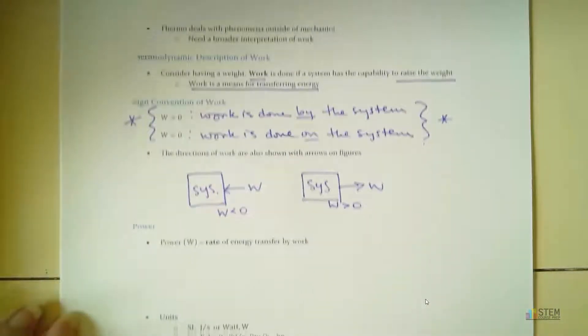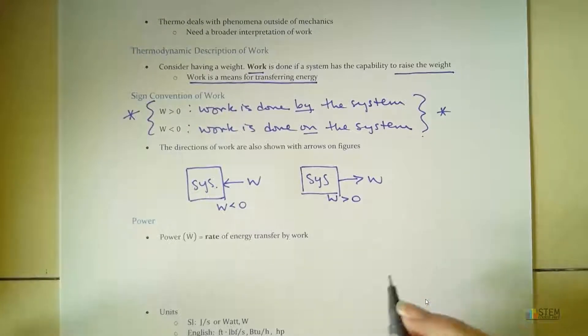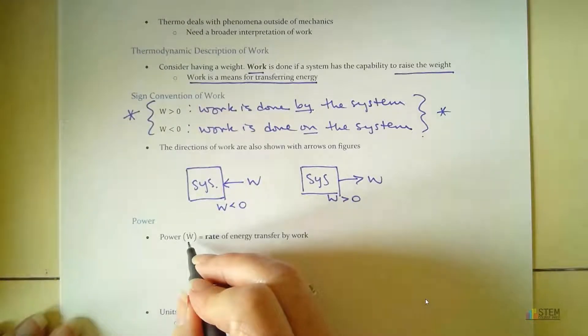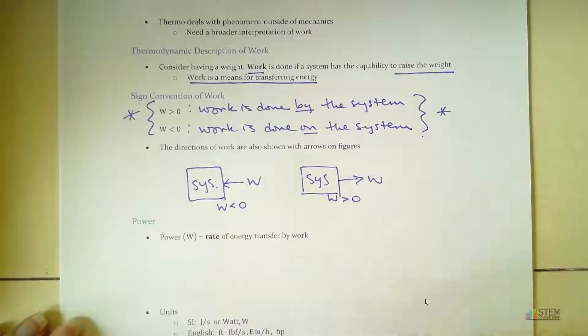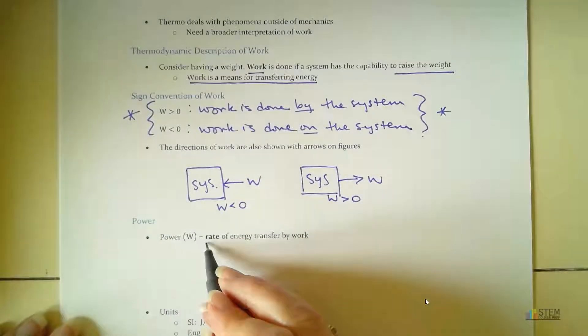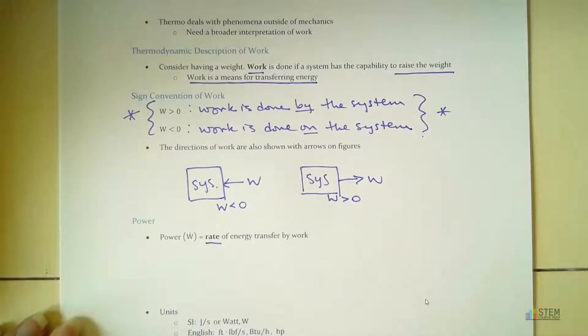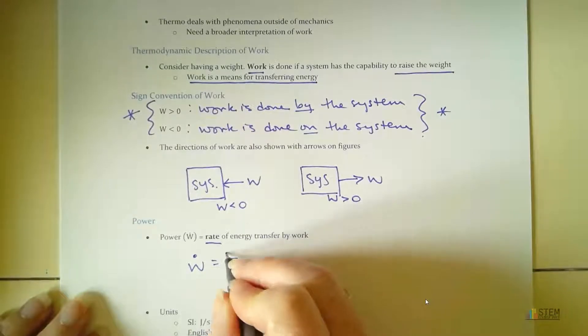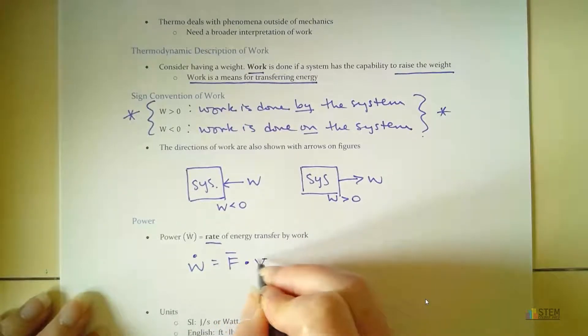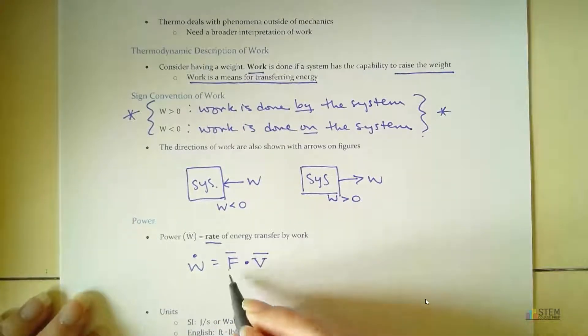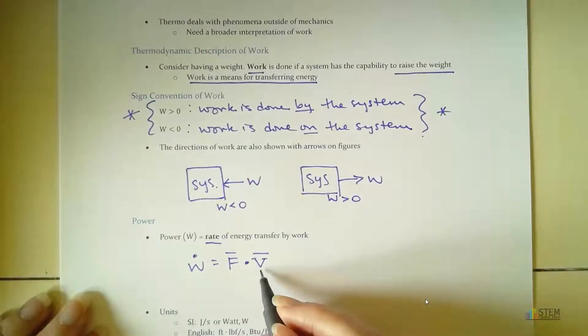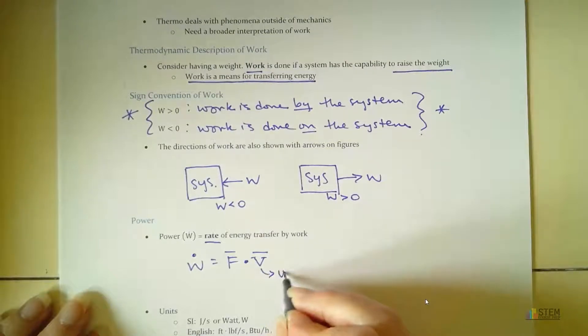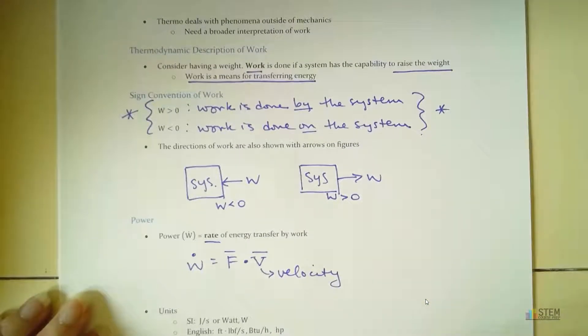Now, power is directly related to work. So our symbol for power is going to be the W with the dot there. And what it is, is it's the rate of energy transfer by work. Okay, and our equation is going to be W dot equals F dotted with V. So this is the force, dot product. And then here we've got velocity.